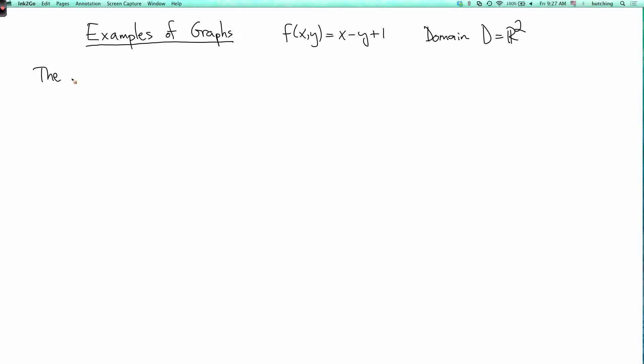So the graph of this function is the surface where z equals f of xy, which means that z equals x minus y plus 1. Now, we can see just from the form of this equation that this is a plane.